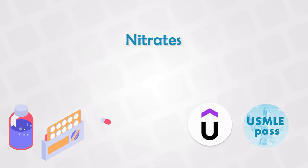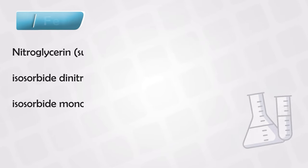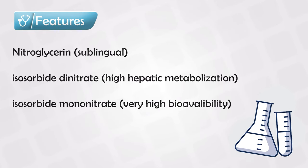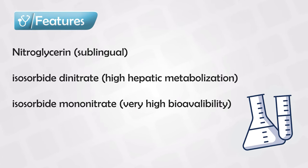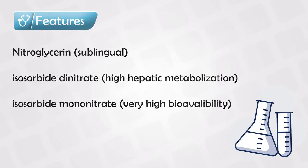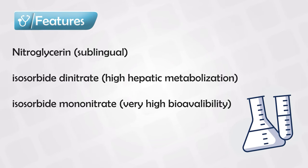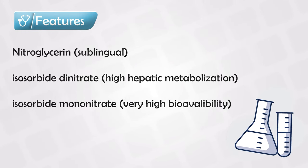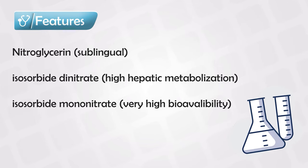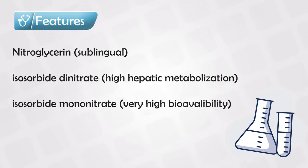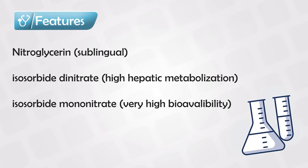Nitric oxide is known as a powerful vasodilator. The nitrate medications include nitroglycerin, isosorbide dinitrate — which is extensively metabolized by the liver — and isosorbide mononitrate, which is actually the active metabolite of isosorbide dinitrate and has almost 100% bioavailability.